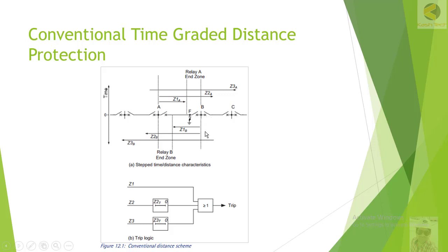For example, if the fault is just beyond Station B, the relay at B trips in Zone 1. If Station B's relay fails to trip for any reason, the relay at Station A will trip in Zone 2, which is again 250 to 400 milliseconds. Similarly, if there is a fault just after C, Station C should trip fast. If Station C's relay fails, Station B trips in Zone 2, and if Station B also fails, Station A trips in Zone 3. This is the concept of graded protection — it is not unit protection.